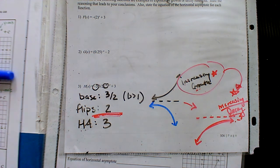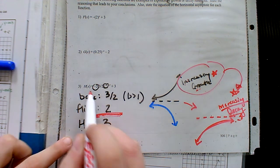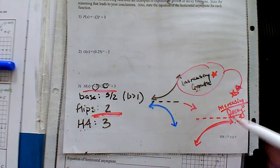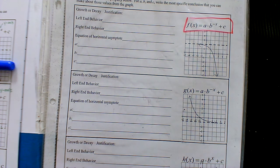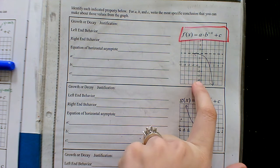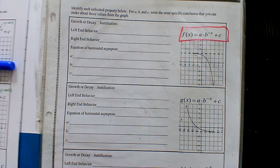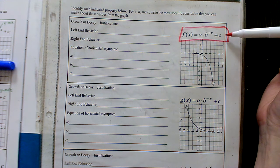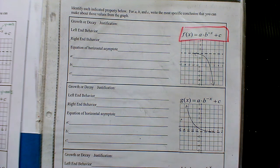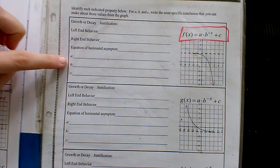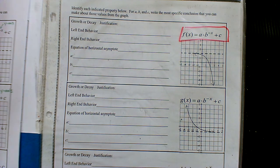We're going to focus today mostly on starting with a graph and trying to describe the equation — going the other way. But we still have to look for the same characteristics to help us make these connections. For our first one, they give us a general picture of what the graph should look like and the setup of the equation, but with missing pieces. We're going to look at the graph, look at the equation, and try to figure out some things about these missing numbers.